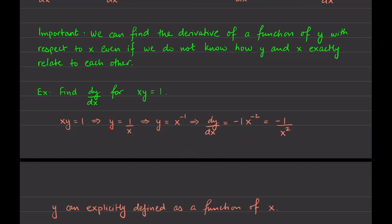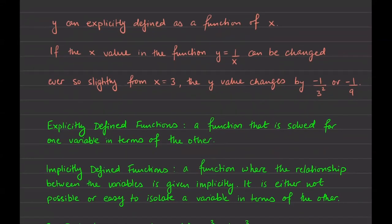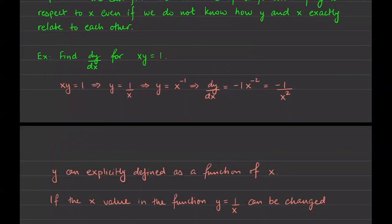Here y is explicitly defined as a function of x. If the x value in the function y equals 1 over x is changed ever so slightly from x equals 3, the y value change will be negative 1 over 3 squared, which is negative one-ninth. An explicitly defined function is one where the function can be solved so that you have one variable on one side and all the other variables on the other side. This is explicitly defined because I can get y by itself on one side and have all the x's on the other.